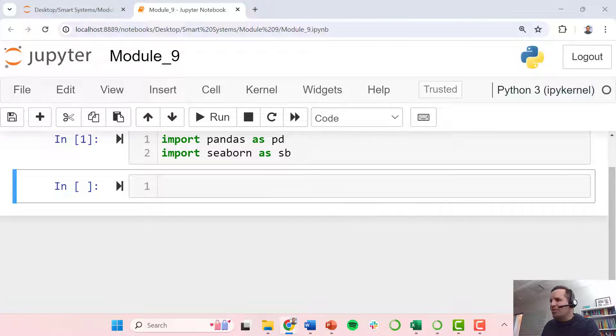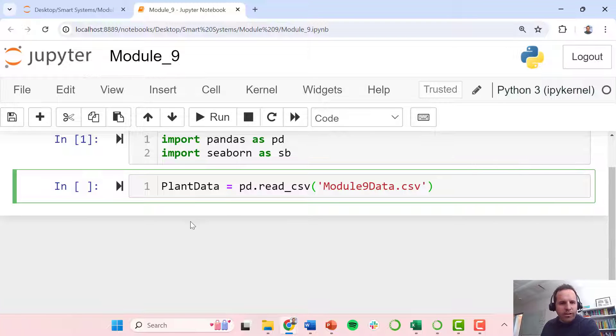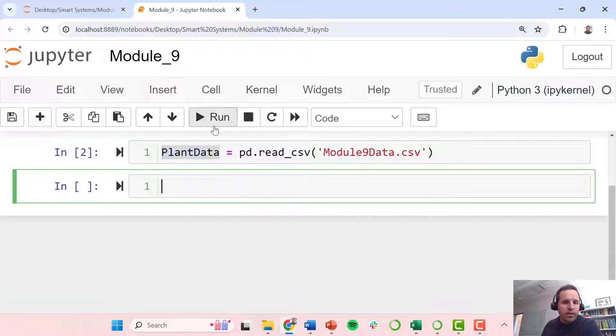We are going to use the pandas utility to import that CSV file, that Module9Data.csv. We're going to import that as a data frame and we're just going to call that data frame variable plant data. So we'll go ahead and import it there.